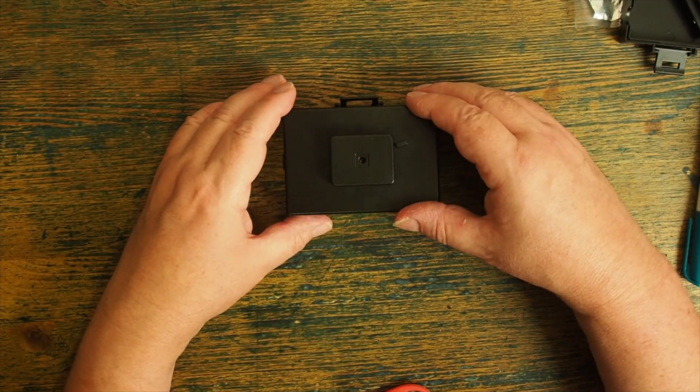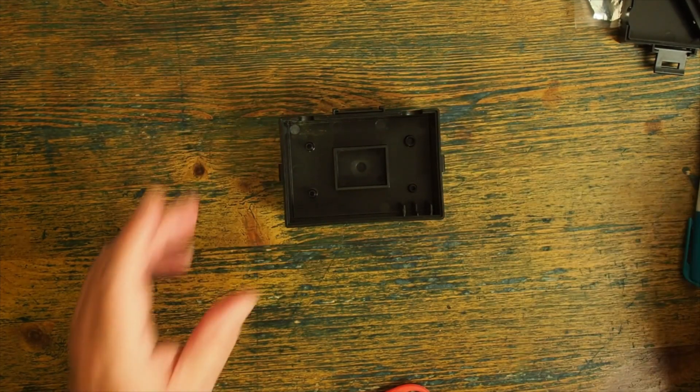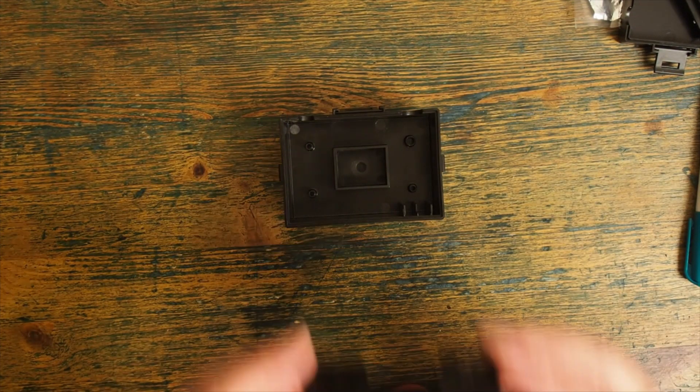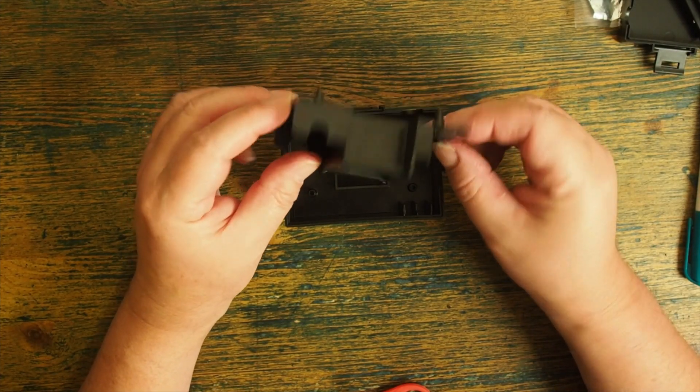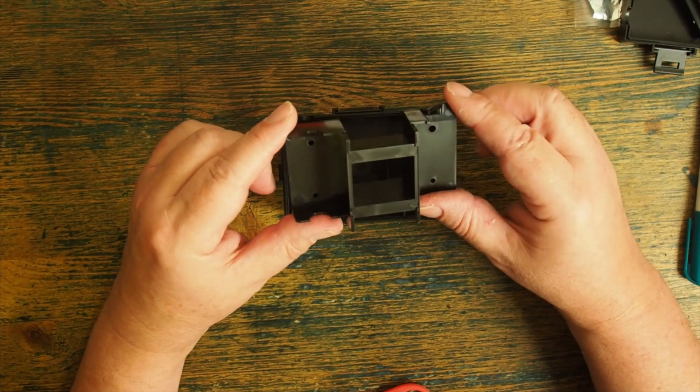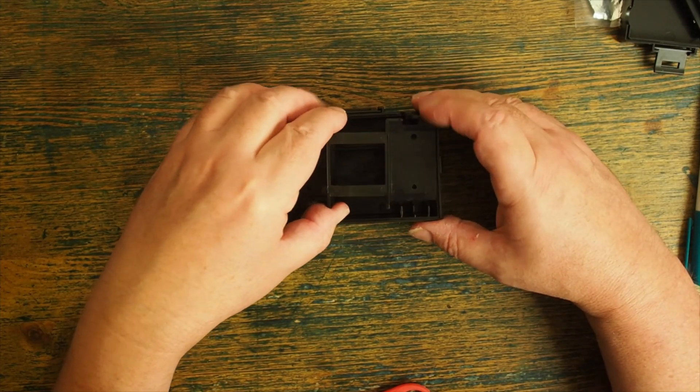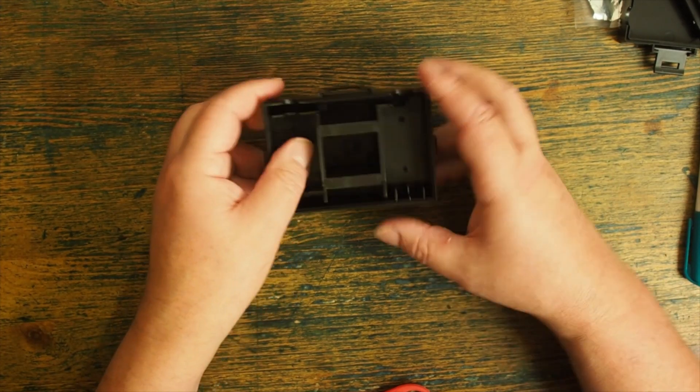So I've built the front of the camera. Turning it over, there's another preformed insert that quite clearly fits in the four holes there. So that should just slot in. It does, nice.